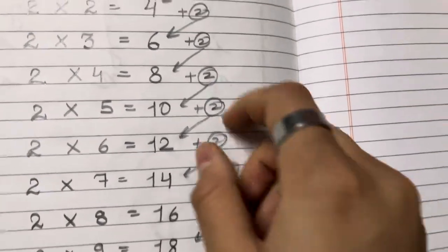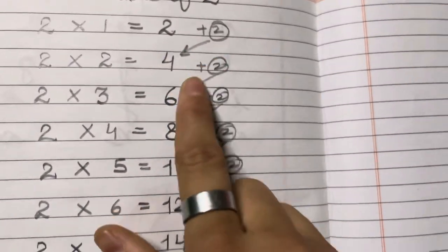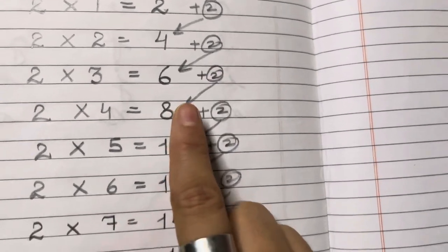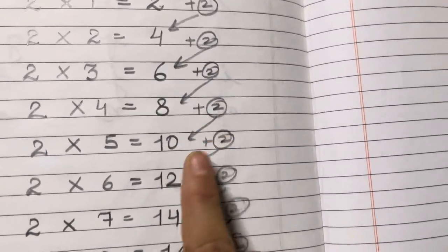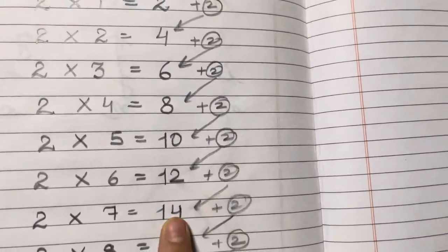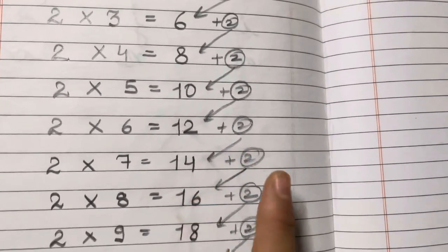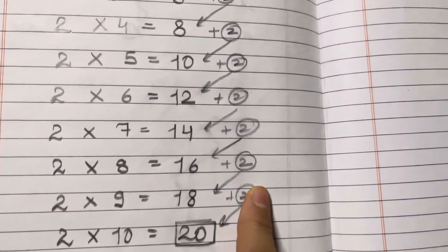We will be adding 2 and we will be getting the next number like 4 plus 2, 6, 6 plus 2, 8, 8 plus 2, 10 and 10 plus 2, 12 plus 2, 14, 14 plus 2, 16, 16 plus 2, 18, 18 plus 2, 20.